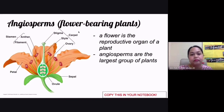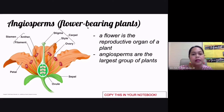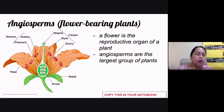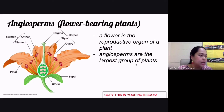Angiosperms are vascular plants with seeds. They have both xylem and phloem. The common name for angiosperms is flower-bearing plants — the flower is the reproductive organ. Angiosperms are the largest group of plants, containing the most species.